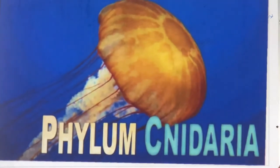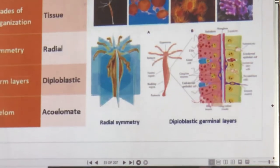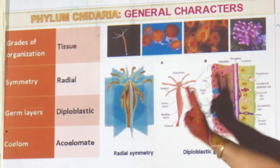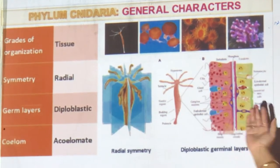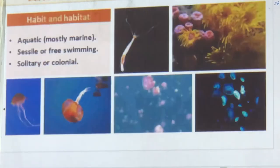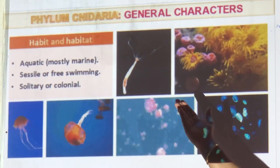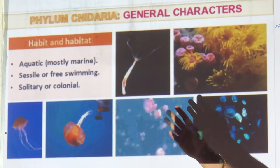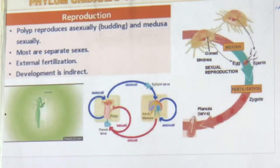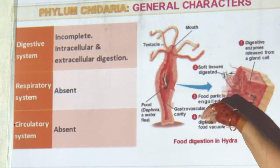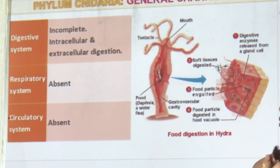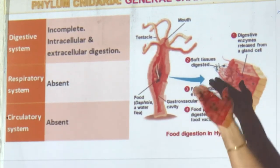Let's go to the next phylum — Cnidaria. They look umbrella-like; a jellyfish is an example. Characteristics: they have tissues, can be cut along any radius (radially symmetrical), have two germ layers (ectoderm and endoderm — diploblastic), and no coelom. They are mostly aquatic, attached or free-swimming, solitary or colonial. The digestive system is incomplete with only one opening. No respiratory system and no circulatory system — water is the main medium.